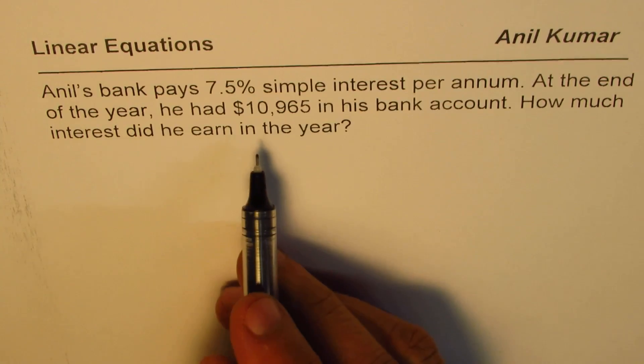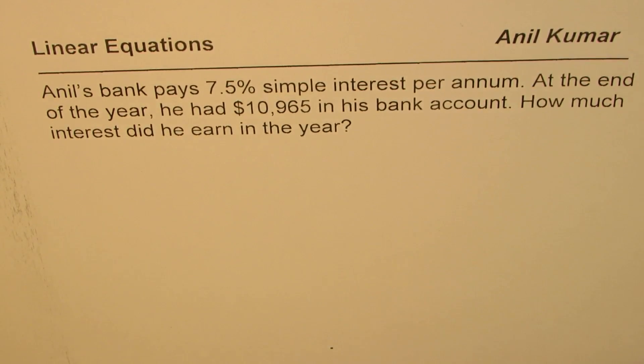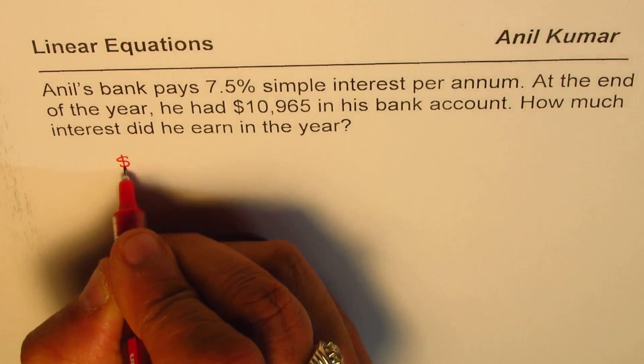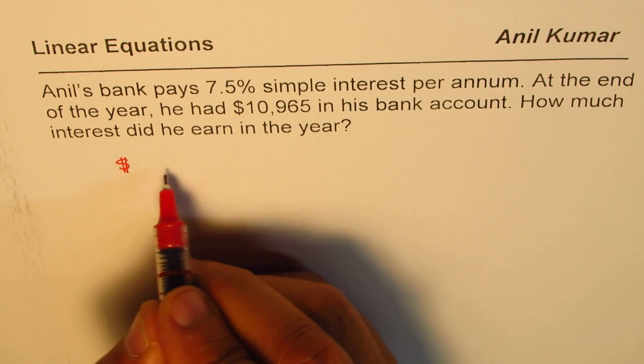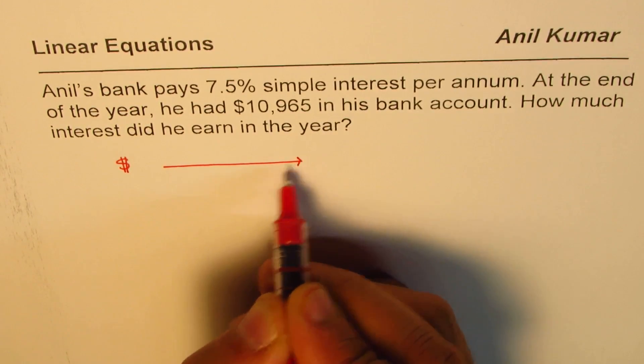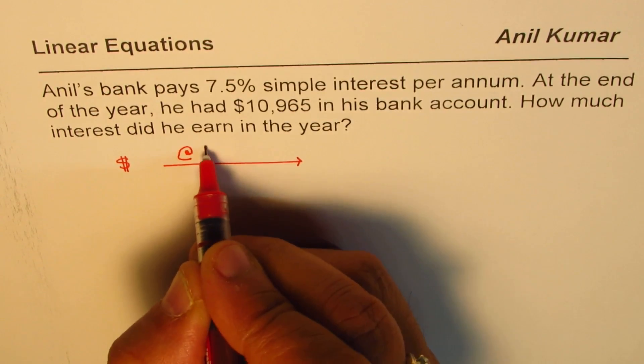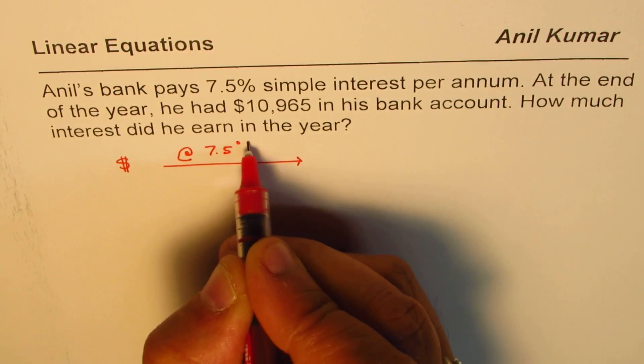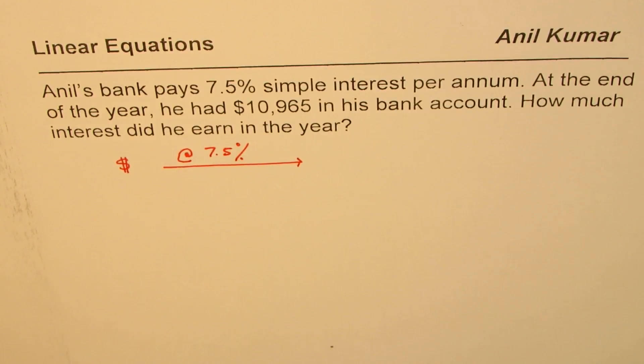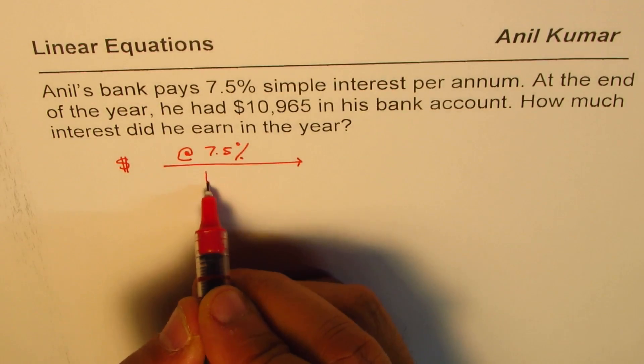What we are assuming here is that we start with one amount. So, we start with one amount of dollars here and this is kept as such for the whole year, getting interest rate of 7.5% per annum. This is per year.